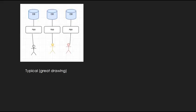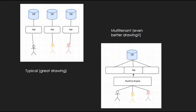So with your non-multi-tenant architecture, each user accesses their own version of an application and that application stores data on its own database. Now if the application ever has to be upgraded, then the application would have to be upgraded on each individual machine. Compare that with your multi-tenant architecture where each user accesses the same instance of an application and that application stores data on the same database. Now the users can't see each other's data because it's all partitioned, but we'll get into that later.